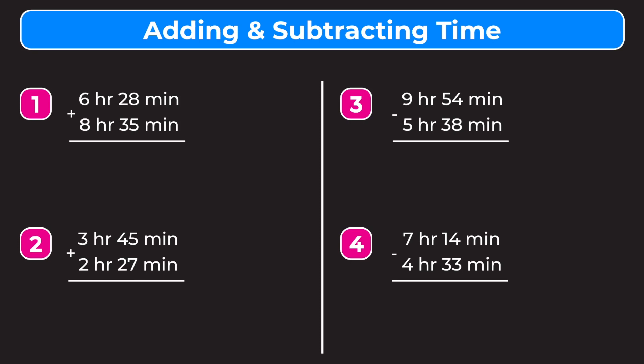In example one we have 6 hours 28 minutes plus 8 hours 35 minutes. We start by adding the minutes: 8 plus 5 gives us 13, so we put a 3 down and carry the 1. Then we add 1 plus 2 plus 3, which gives us 6, so we get 63 minutes.